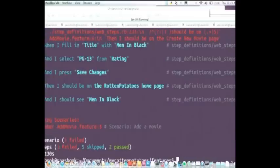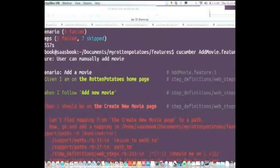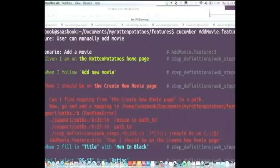So we saw, if you saw carefully, a green one went by. So this path passed. I am on the Rotten Potatoes homepage. When I follow add new movie, that passed. The thing that failed. The step that said, then I should be on the create new movie page failed. So, I'm going to try and copy that again.